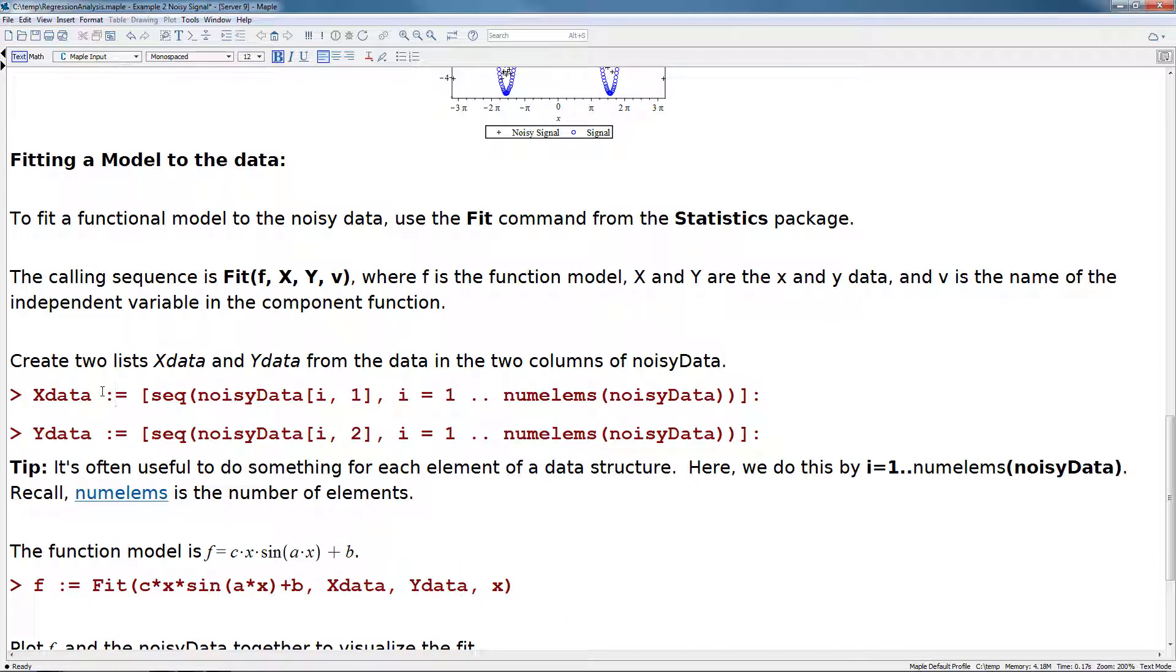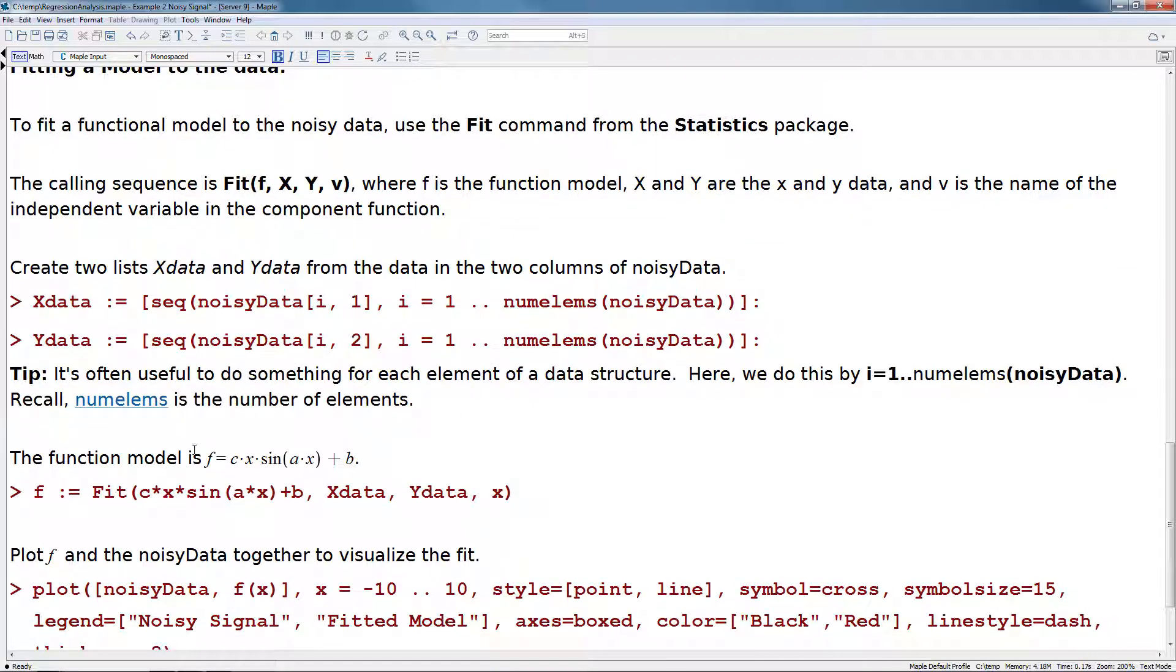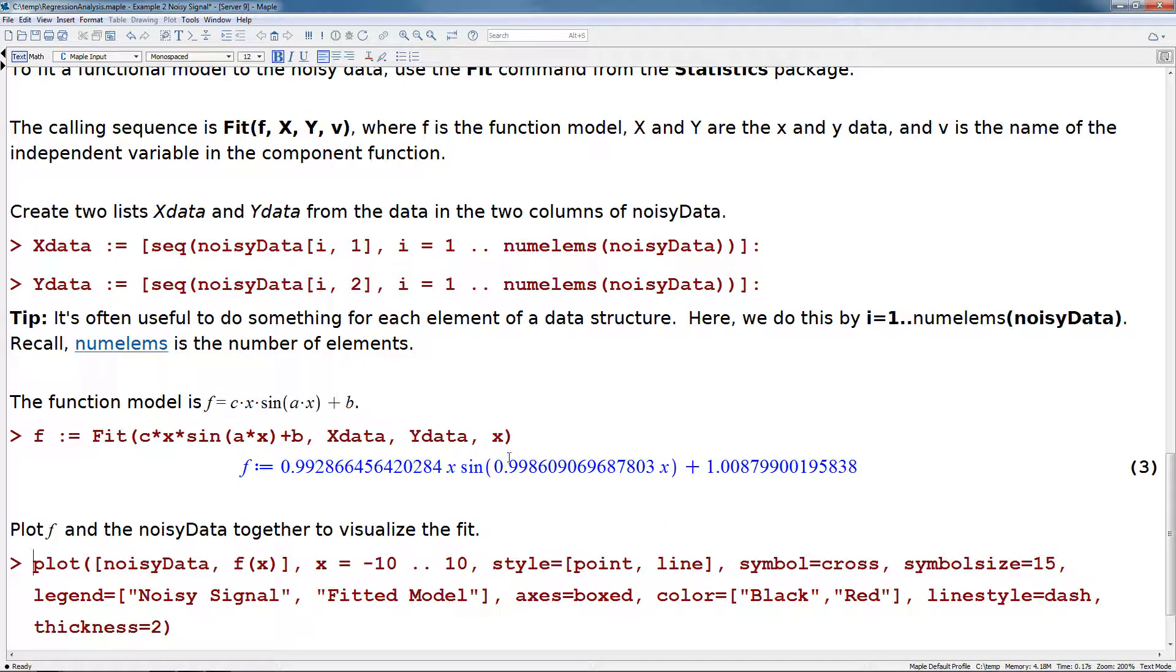So we start by creating two lists, x data and y data from the data in the two columns of noisy data. Then we declare our function model and it's going to be f equals c times x times sine of x times a plus b. We use the fit command on this function model to fit the x data and y data. This is our resulting model.